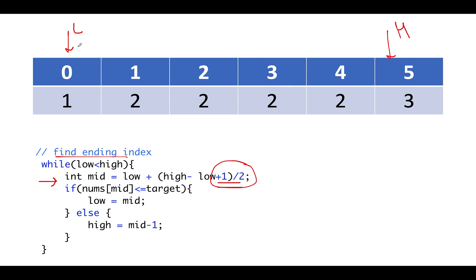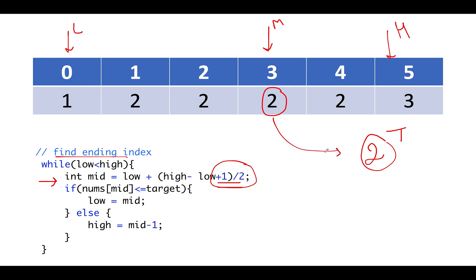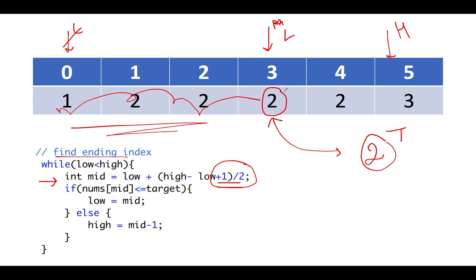Low points to zero, high points to five. Zero plus five gives five, five plus one gives six, six by two gives three. Therefore the middle element comes as three. We check the element at mid index three — it is 2, and the target is also 2. Since both are equal, we can discard all elements towards the left of index three, because we are interested in identifying the rightmost index. As a result, we update low to the middle index.